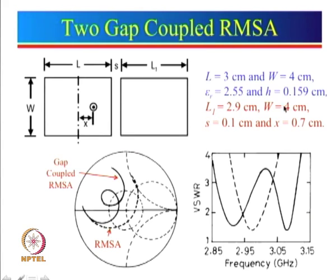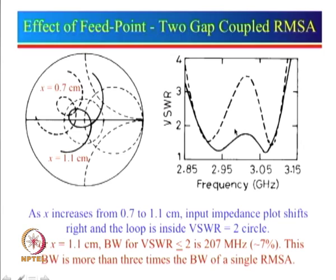We need to shift the feed point towards the edge so that we can get the impedance plot shifted. The gap is kept as s equal to 0.1 cm. We will see the effect of the gap in the next few slides. Let us first look at the effect of the feed point. Here is the plot for x equal to 0.7 cm; we shifted the feed point towards the edge by increasing x from 0.7 cm to 1.1 cm, and now we can see that the entire loop is within the VSWR equal to 2 circle.